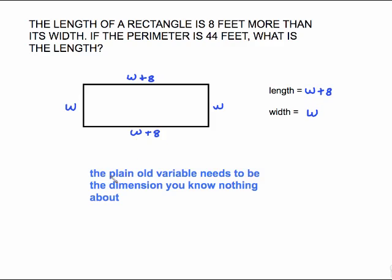Remember, the plain old variable needs to be the dimension you know nothing about. The problem said the length is something — you know something about the length. Width was not mentioned, so that's why width is the plain old variable.